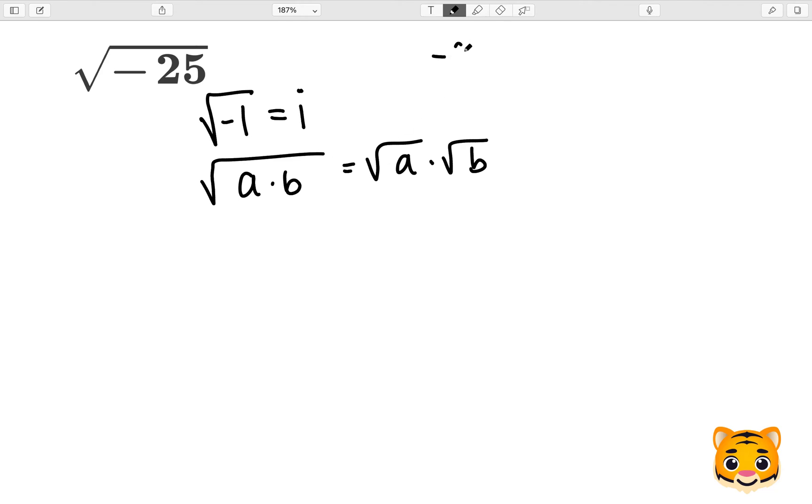For negative 25, we can rewrite this as negative 1 times 25. Now we can rewrite the square root of negative 25 as the square root of negative 1 times 25, and then use this math rule to rewrite this as the square root of negative 1 times the square root of 25.